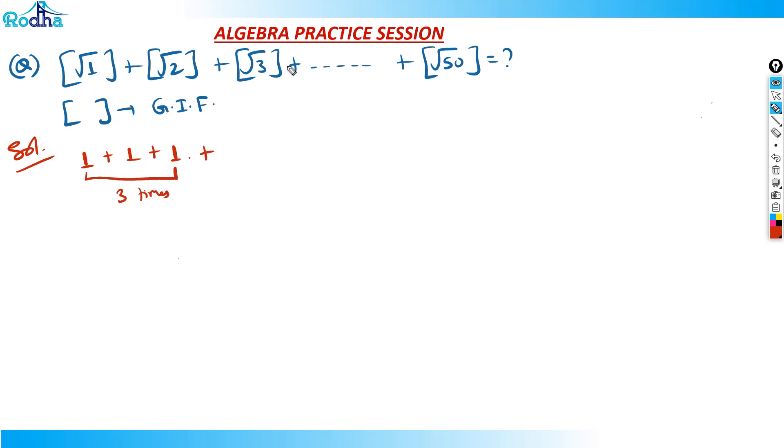Then obviously after that, √4 will start. This one is for √3, this is for √2, this is for √1. After that, I'll start with √4. What is √4? √4 is 2. √5 is 2 point something, again 2. This will go till √8, because √8 is 2 point something. From √9, 3 will come. So √4 to √8, 2 will occur 5 times.